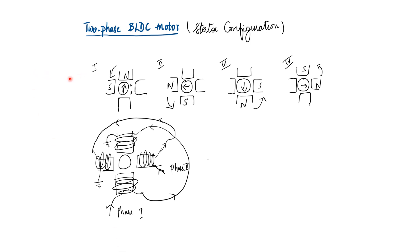So here let us look into the two-phase BLDC motor, its working and its stator configuration. The simplest configuration is with four stators and one rotor with two poles.